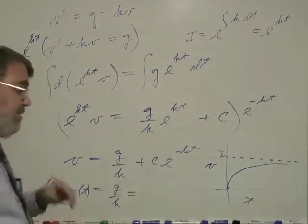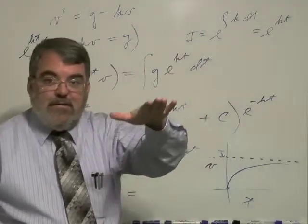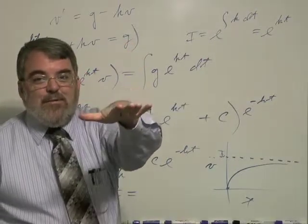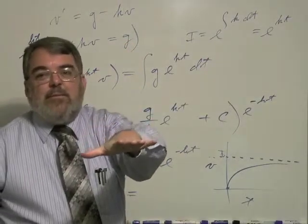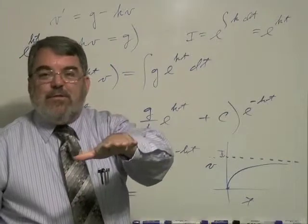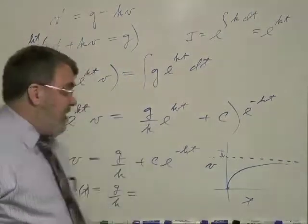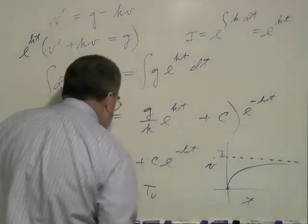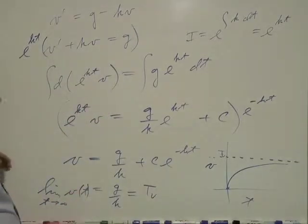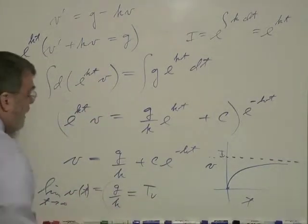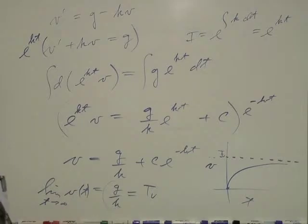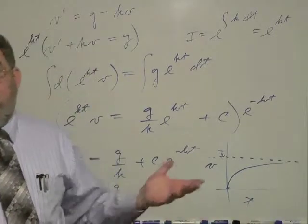And we're left with g over k. And so if we say, well, okay, the limit as t goes to infinity means that you can fall faster and faster, but you're going to approach that equilibrium point where the air is cushioning you. And that's called terminal velocity. So the limit is the terminal velocity. And look, look at that. We found out what the terminal velocity is. It's gravitational acceleration divided by whatever k happens to be.